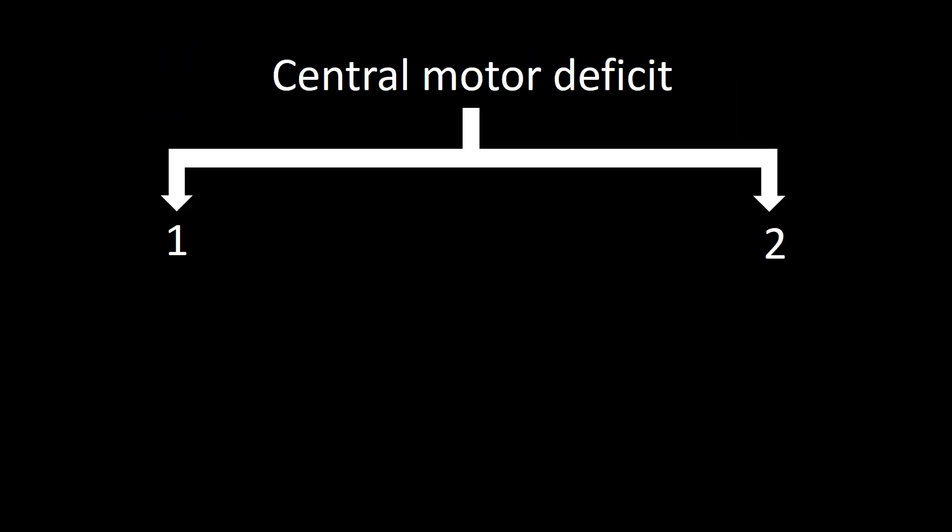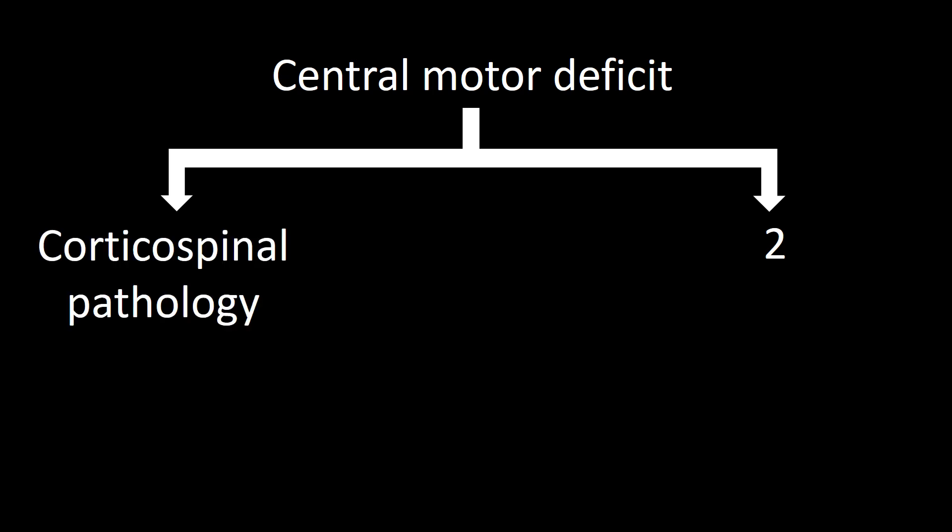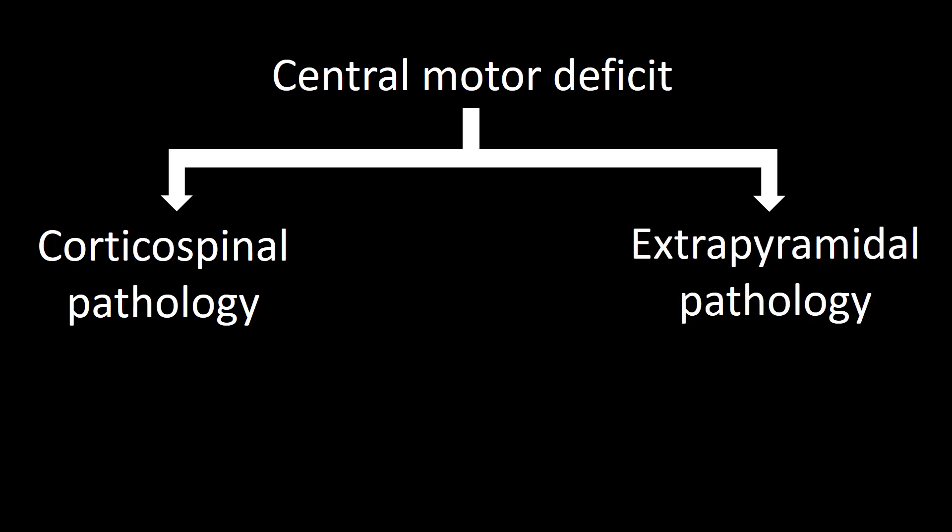Central motor deficit can be divided into two groups: those that occur as a consequence of corticospinal pathology and those that occur as a consequence of extrapyramidal pathology. In the next few frames, we will populate a table highlighting the differences between them.